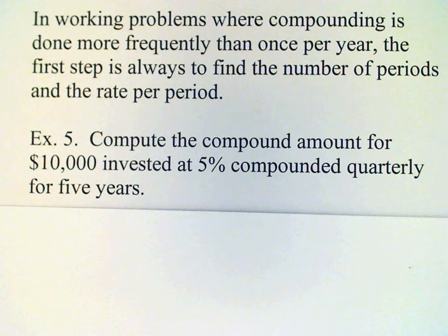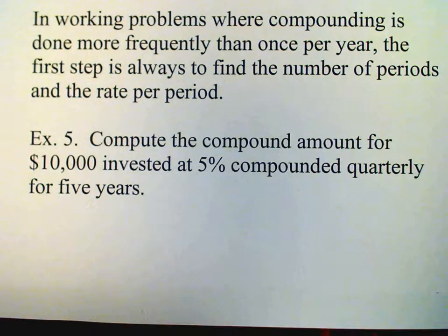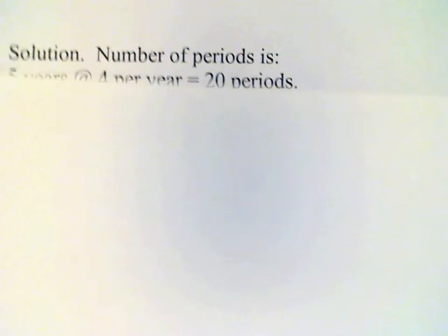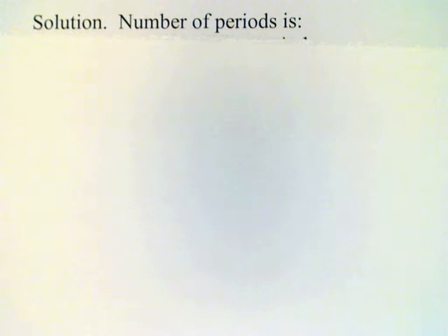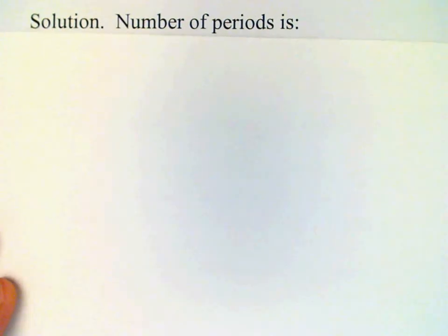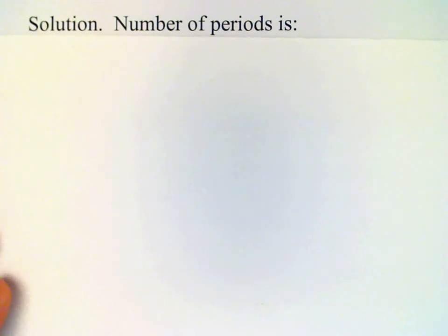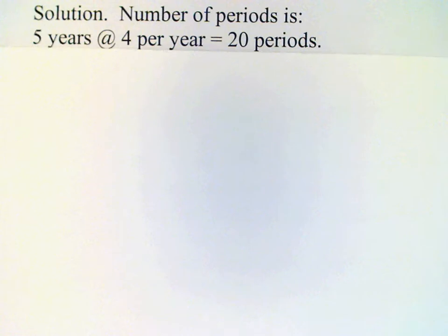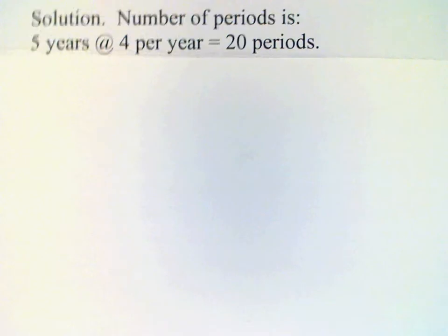The first thing we need to do is work out the number of periods and the interest rate per period. Quarterly compounding means that we have 4 periods per year, or 20 periods in 5 years.